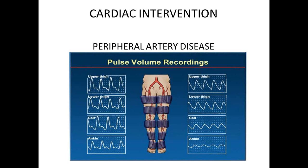We're going to stop here. In the next lecture, we'll look at a few abnormal pulse volume recordings and ankle brachial index values, then go on to other studies — duplex scan of the carotid arteries, the aorta, and the lower extremity arterial system — as well as some MRAs, CTAs, and angiograms with intervention.